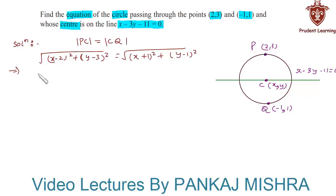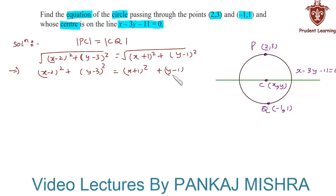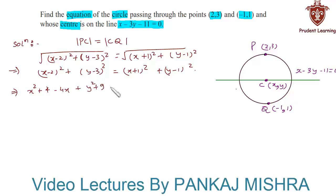On squaring both sides we have (x minus 2) whole square plus (y minus 3) whole square equals (x plus 1) whole square plus (y minus 1) whole square. Expanding each of the terms: x² plus 4 minus 4x plus y² plus 9 minus 6y equals x² plus 1 plus 2x plus y² plus 1 minus 2y.